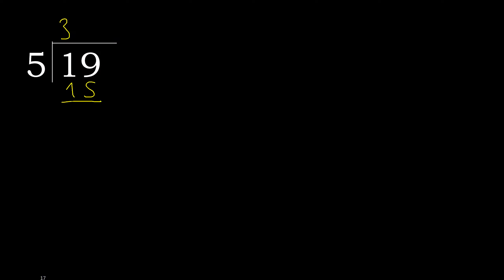19 minus 15 is 4. There is no next number, therefore complete.